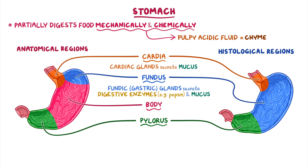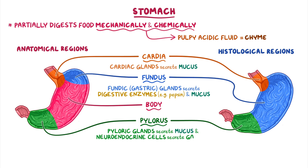The pylorus is the most distal region of the stomach before reaching the pyloric sphincter. This region has a combination of pyloric glands that secrete mucus and neuroendocrine cells that secrete gastrin.